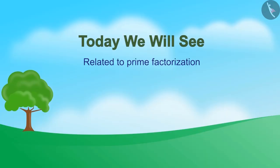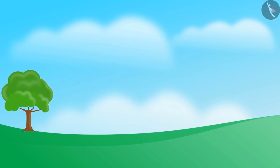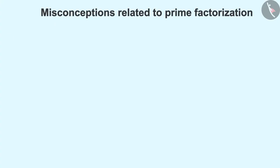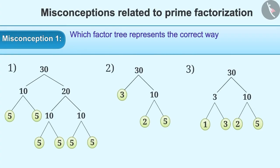Today we will see some common misconceptions and mistakes related to prime factorization. Misconception 1: Which factor tree represents the prime factorization of 30?